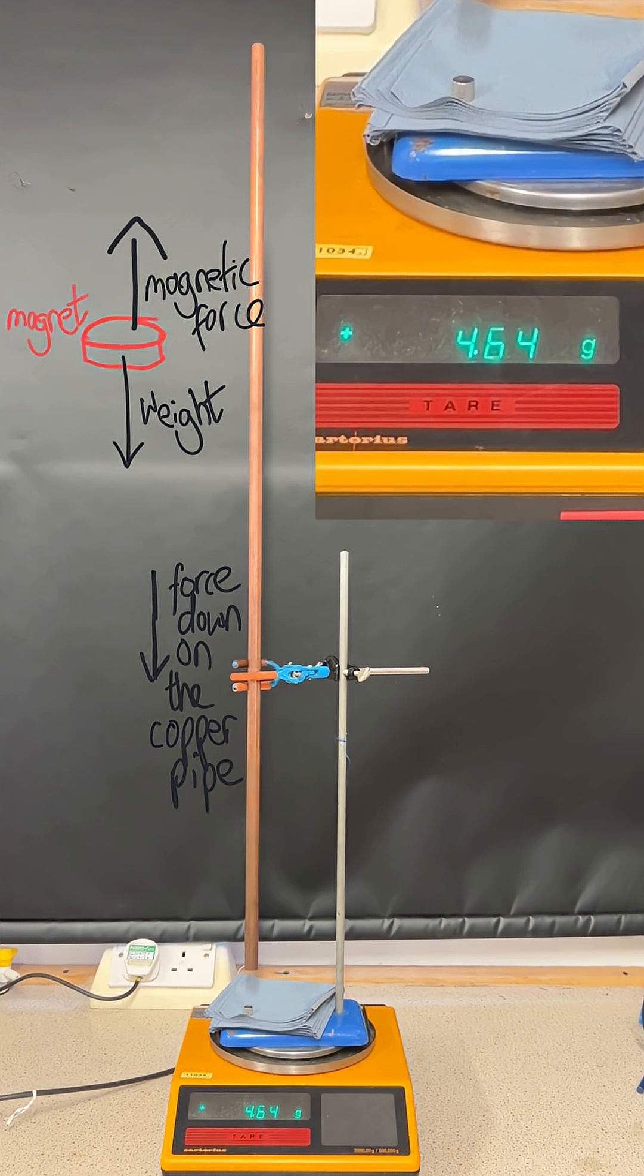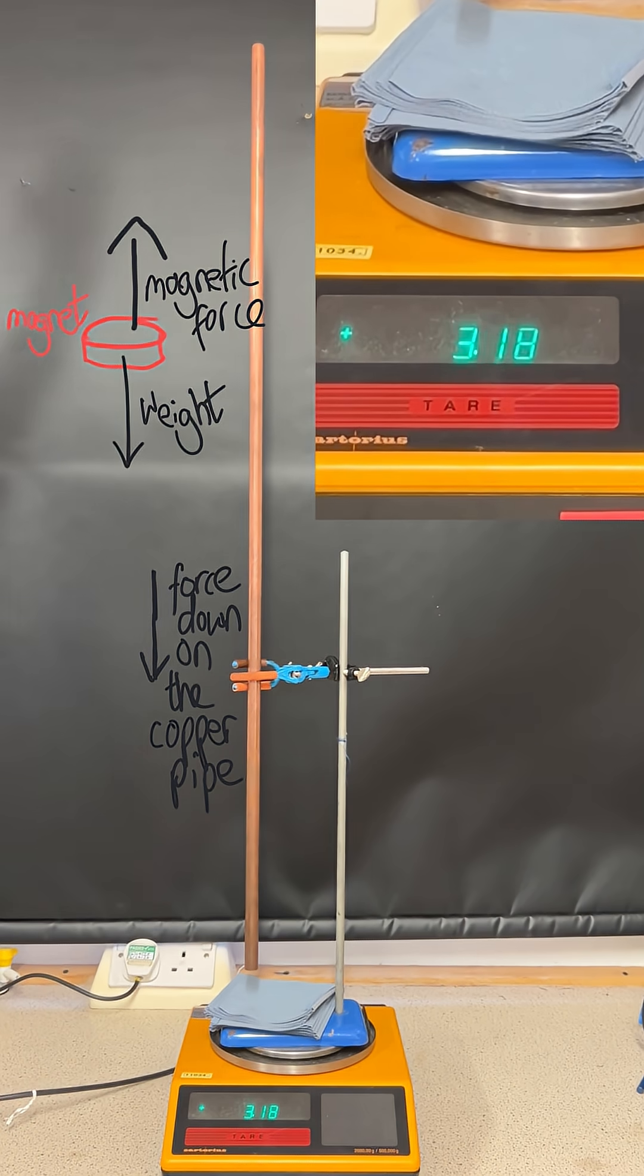So as the magnet accelerates up to its terminal velocity, the force up on the magnet increases to be equal to the weight of the magnet, and the force down on the copper pipe, by Newton's third law, increases to be equal to the weight of the magnet as well. And that causes the balance reading to increase until it is equal to the mass of the magnet.